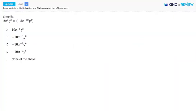Hi, this is King of Review. Here we have to simplify the product of two algebraic exponential expressions: 2x to the 3rd, y to the 3rd, times negative 5x to the negative 12th, y to the 3rd.